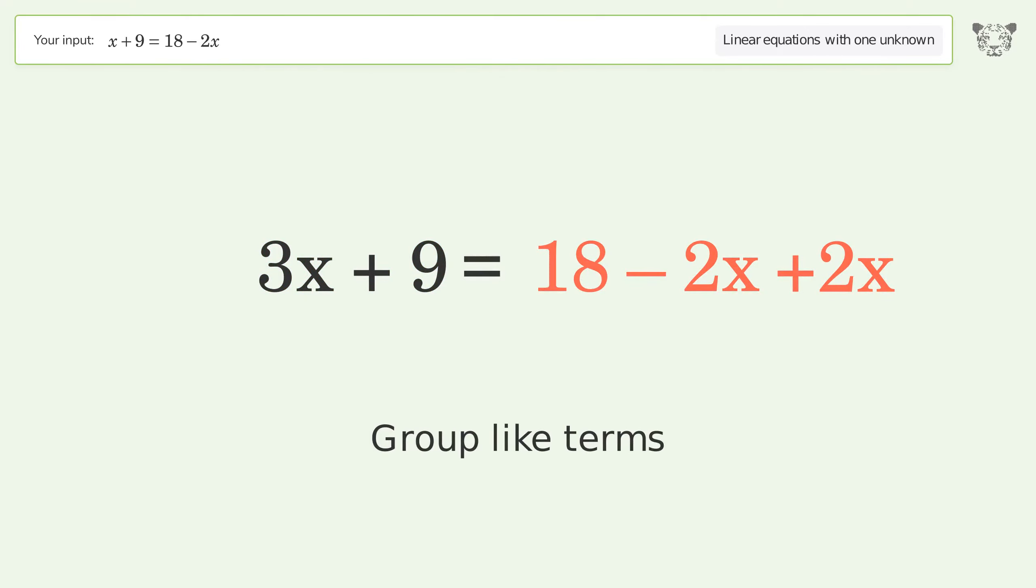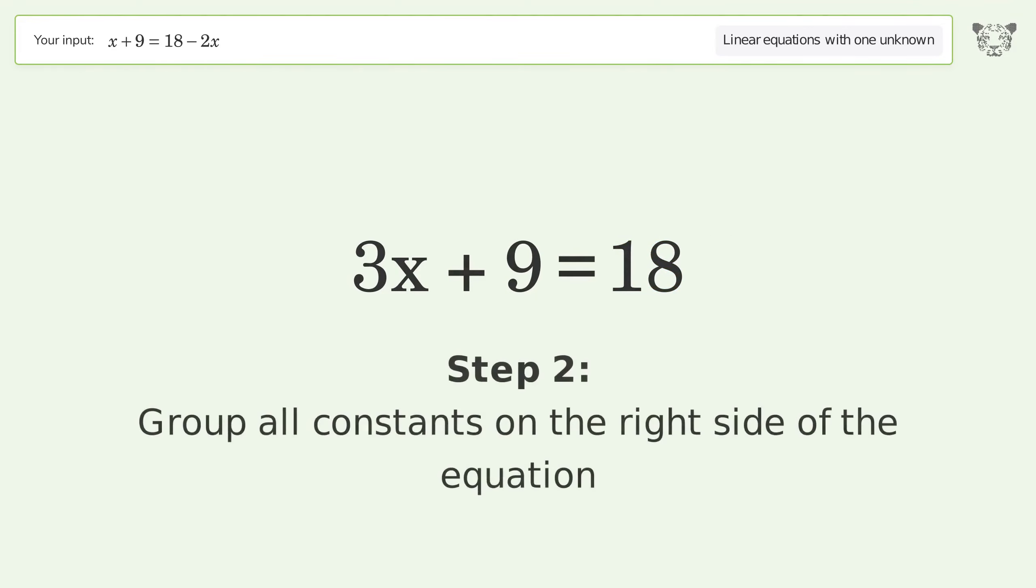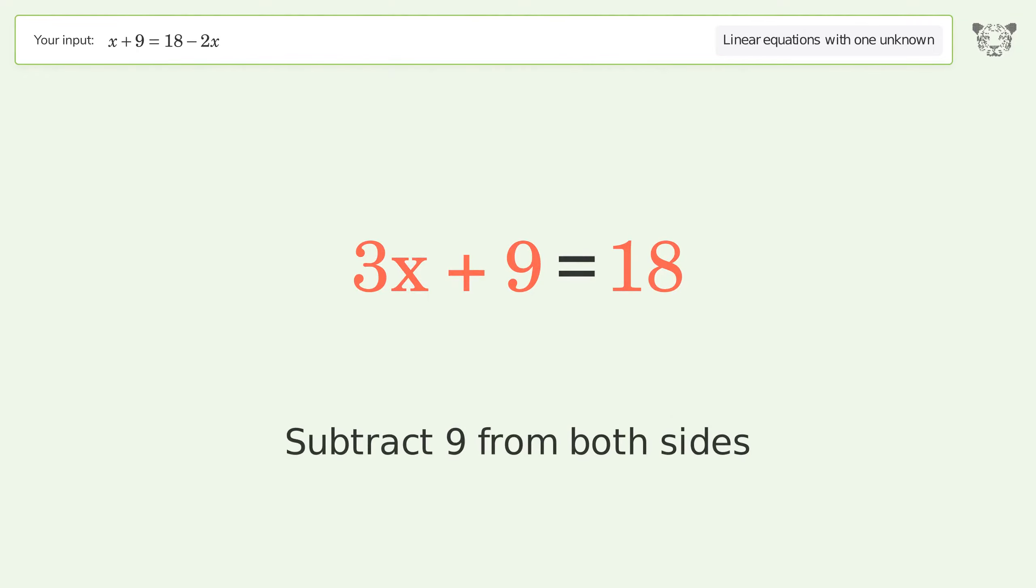Group like terms. Group all constants on the right side of the equation. Subtract 9 from both sides.